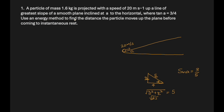Use an energy method to find the distance the particle moves up the plane before it comes to rest. The particle comes to rest at distance x up the plane, reaching height h. The energy equation is: work done by applied force = work done by resistive force + change in KE + change in PE. Since it was projected, there is no applied force over distance x, so work done by applied force = 0.